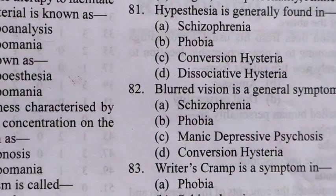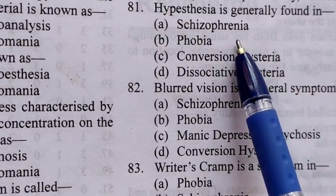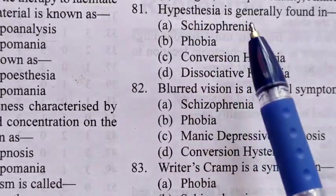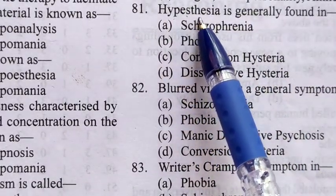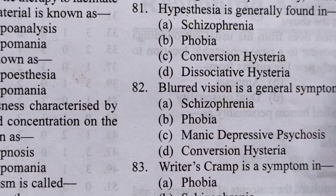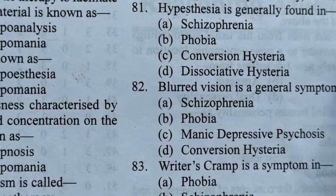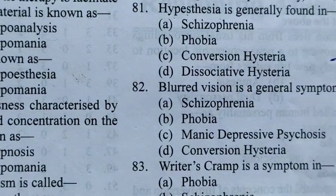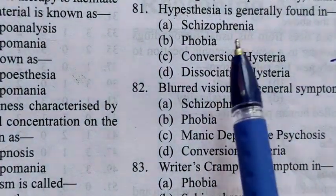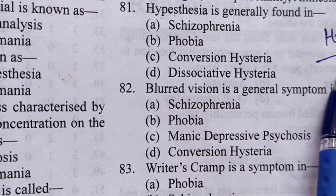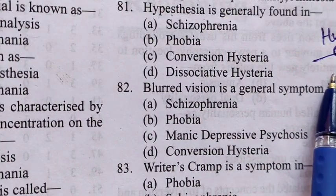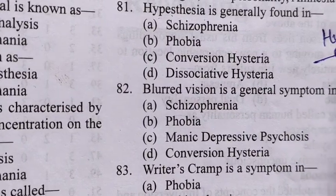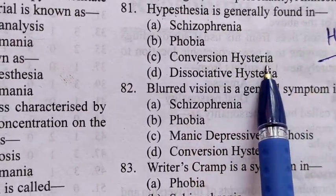81st question: Hyperesthesia is generally found in — so students, first thing is that hypoesthesia is numbness, when you can't feel. That numb, sunna pad jaana, woh cheez hoti hai. And hyperesthesia — so the answer is C, conversion hysteria.